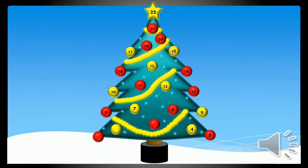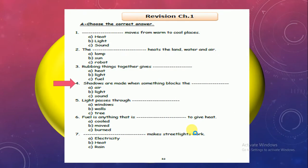And number 4. Number 4, shadows are made when something blocks the air, light or sound. I'm sorry guys, shadows are made when something blocks, not blocks, blocks the air, light or sound. Light, good job.